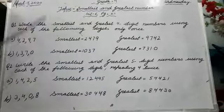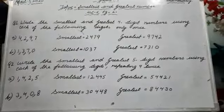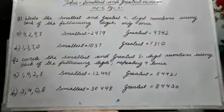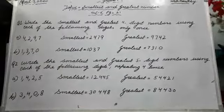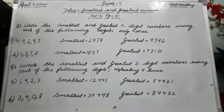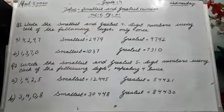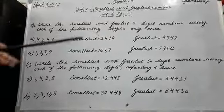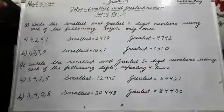First, you know how to write the smallest number and how to write the greatest number. In the smallest number, you write from smallest to greatest digit. In the greatest number, you write from greatest to smallest — big to small.